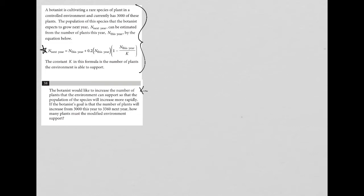So that's K — we want to increase K so that the population of the species will increase more rapidly. If the botanist's goal is that the number of plants will increase from 3,000 this year to 3,360 next year, that means we want n next year to equal 3,360, where n this year is equal to 3,000.